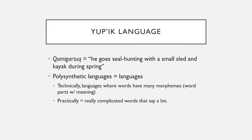To put that in more practical terms, polysynthetic languages have very complicated words that can say a lot in a single word. For example — the R should have more of a guttural sound to it — and that one word would mean: 'he goes seal hunting with a small sled and kayak during spring.'